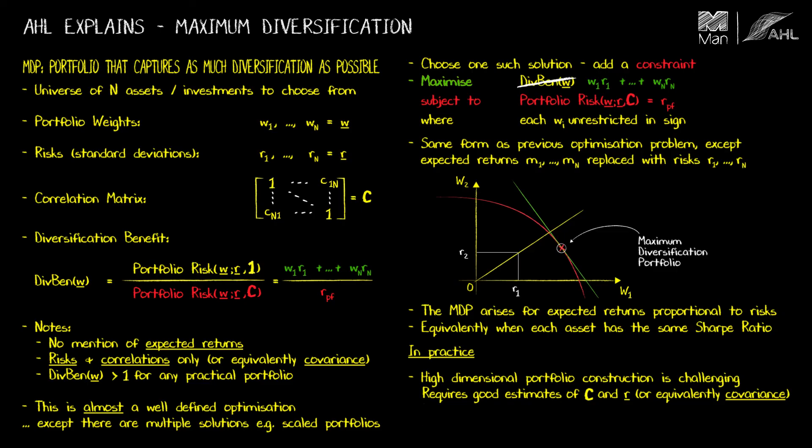For example, in order to avoid putting too much weight on assets that provide good diversification, you may need to add additional constraints. Additionally, you may wish to control liquidity, leverage, turnover, sector allocations, or position limits. All of these complicate the portfolio construction.